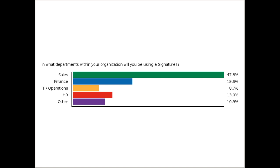Almost half of the poll respondents indicated that sales was a key area for them — not surprising given our need for managing business continuity and work from home. Finance and other came in at 20%, HR at 13%, IT operations at 8%, and other at just under 11%. There is a significant need to use electronic signatures to optimize sales first, and that absolutely makes a lot of sense.